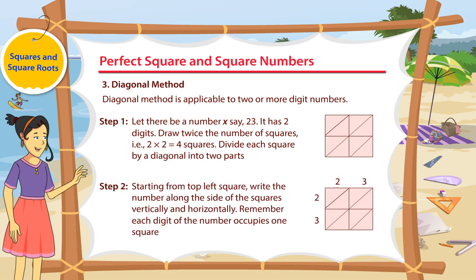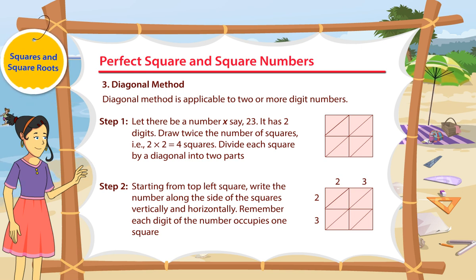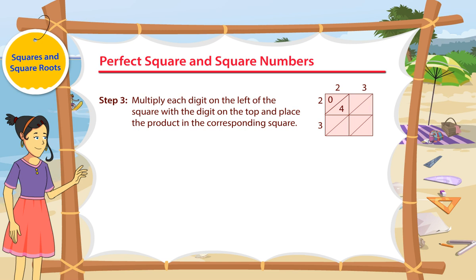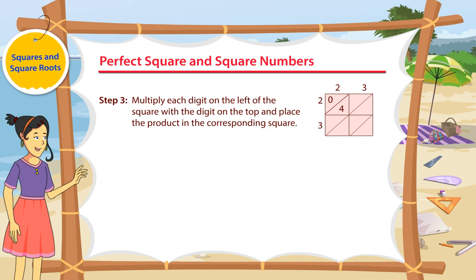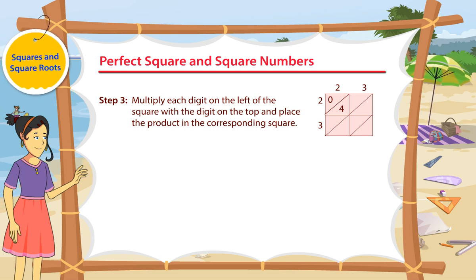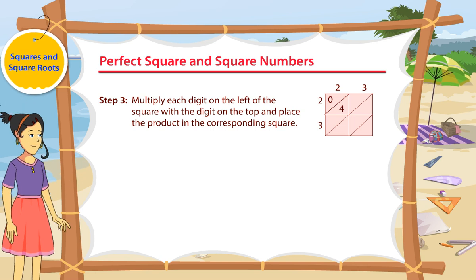Step 2: Starting from the top left square, write the number along the side of the squares vertically and horizontally. Remember, each digit of the number occupies one square. Step 3: Multiply each digit on the left of the square with the digit on the top and place the product in the corresponding square. The tens digit of the product should be placed above the diagonal and the units digit below the diagonal in that square.